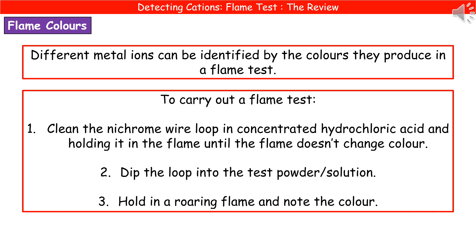You do need to know the actual procedure for this. First, we get a nichrome wire loop — if you can't remember 'nichrome', you can just describe it as a wire loop and still get the marks. We need to clean that wire loop first by dipping it into some concentrated hydrochloric acid, then holding it in the Bunsen flame until the flame stops changing colour, which tells us there's nothing on the loop itself.